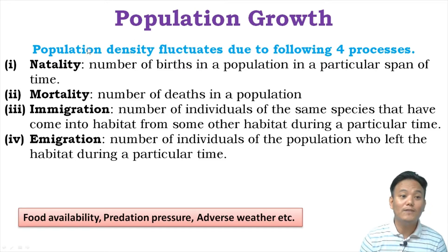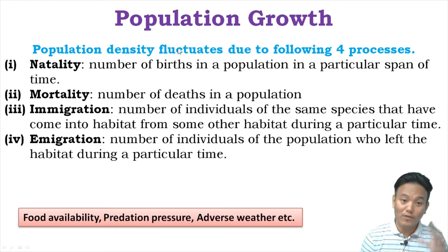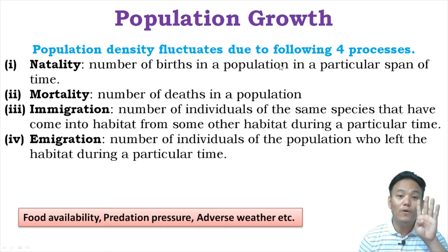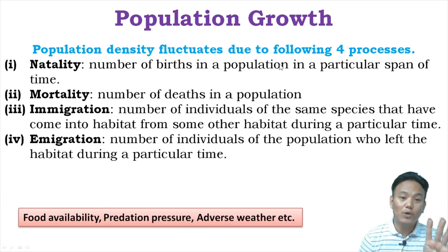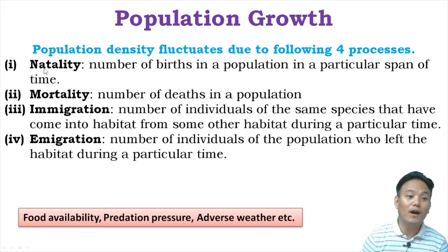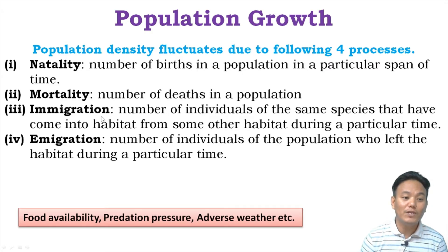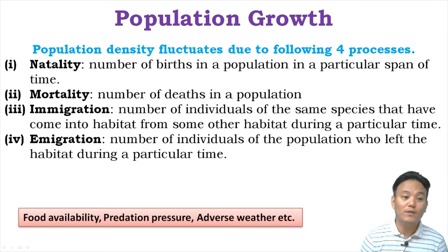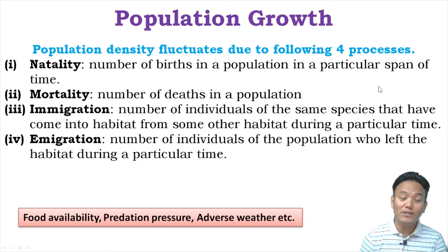In your textbook it is given that the population density of a location fluctuates due to four basic processes. Those four basic processes are natality, mortality, immigration, and emigration. These four words are important — you have to remember the definitions. Natality means the number of births in a population in a particular span of time.